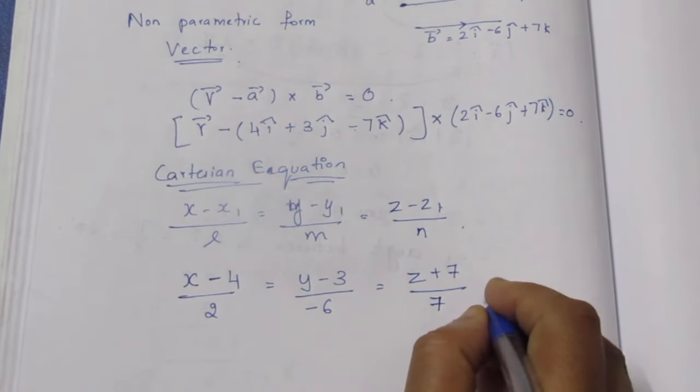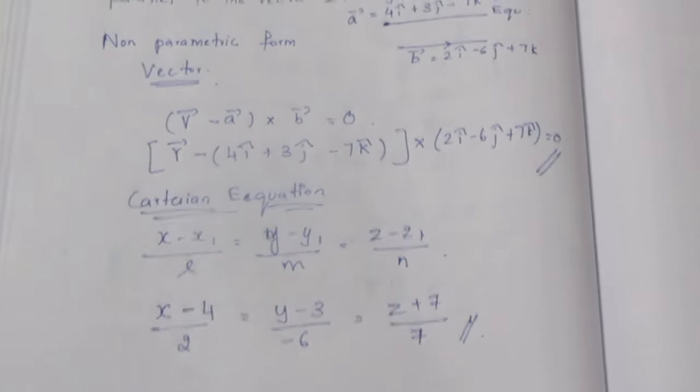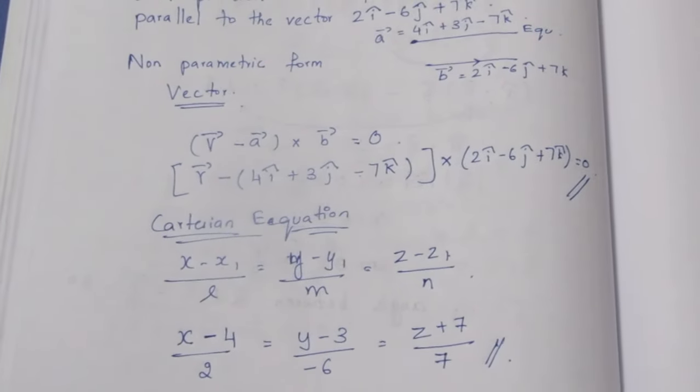This is the Cartesian equation. So this is the vector equation, this is the Cartesian equation. We will do the second question. Thank you.